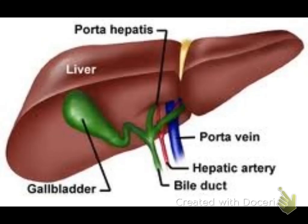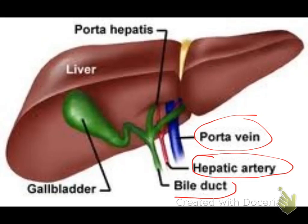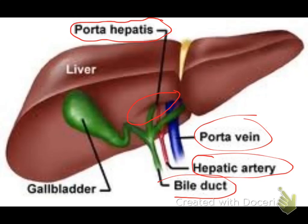Looking at the graph: this is the liver, this is the portal vein, the hepatic artery, and the bile duct. They all come into the liver through the transverse fissure called the porta hepatis, which is located on the visceral surface of the liver.